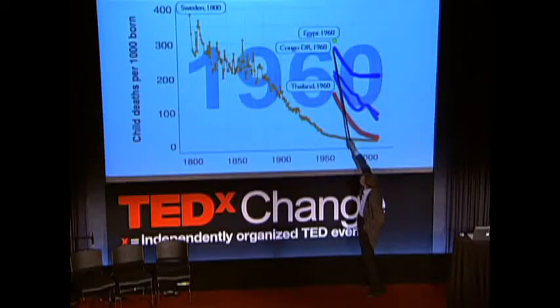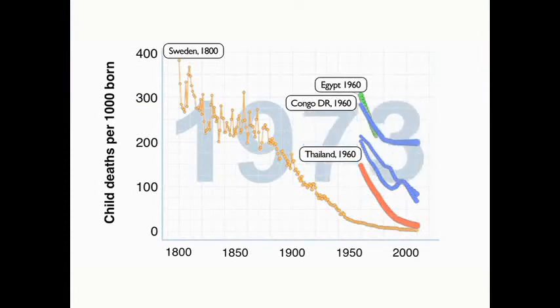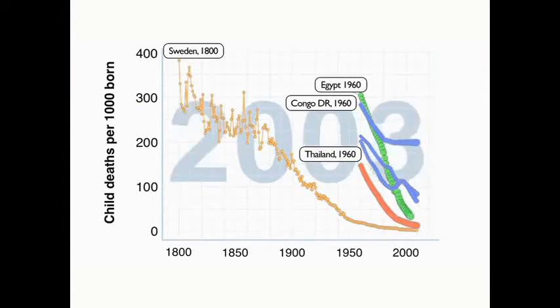The Nile Delta was a misery for children with diarrheal disease, malaria, and a lot of problems. Then they got the Aswan Dam, electricity in their homes, increased education, primary health care, safer water, and they eradicated malaria. And down they went. Isn't it a success story?